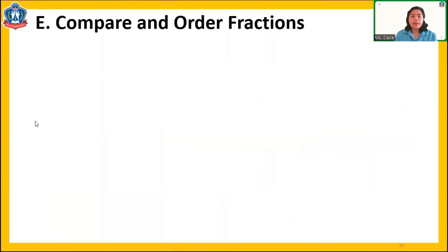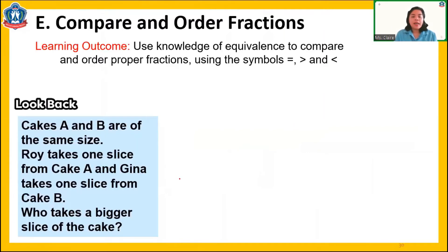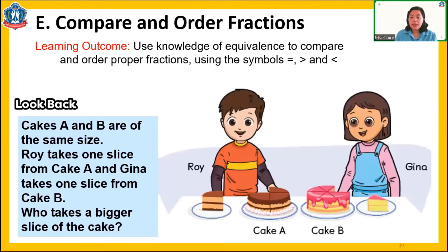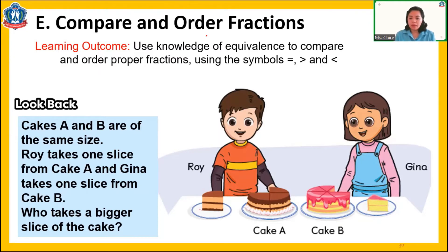Now let's study lesson E — compare and order fractions. Cakes A and B are of the same size. Roy takes one slice from cake A and Gina takes one slice from cake B. Who takes a bigger slice of the cake — Roy or Gina? Roy's cake is divided into four equal parts. Gina's cake is divided into eight equal parts. Who has the bigger slice? It's Roy. Remember: if we divide a whole into a smaller number, the part is bigger. But if you divide a whole into more parts, the part becomes smaller. Therefore, one quarter is greater than one eighth.